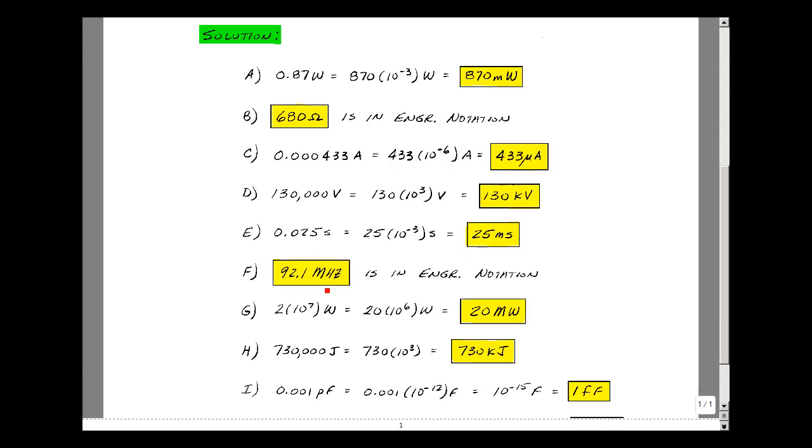92.1 megahertz is the number between 1 and 1,000. It's in engineering notation. 2 times 10 to the 7th watts we could write as 20 times 10 to the 6th. And 10 to the 6th is mega. 20 megawatts.